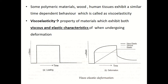In the case of polymeric materials and human tissues, this is significant. They also exhibit similar time-dependent behavior, meaning the amount of plastic strain that recovers and disappears with time is called viscoelasticity. It is a property of materials that exhibit both viscous and elastic characteristics. Elasticity results from stretching of atomic bonds along crystallographic planes in an ordered solid, while viscosity results from diffusion of atoms or molecules inside an amorphous material.